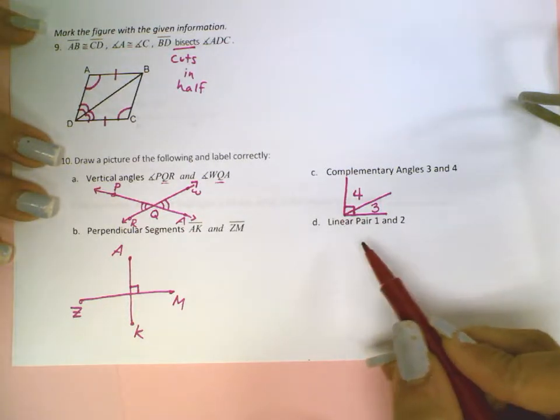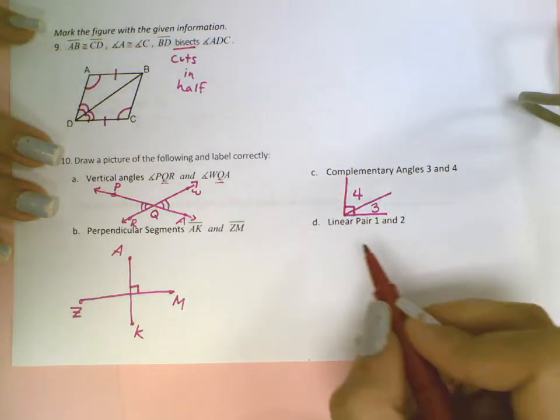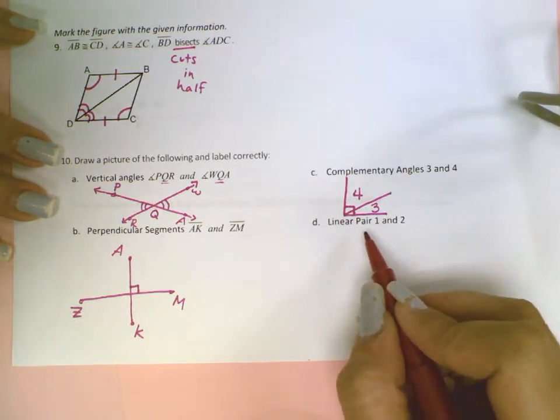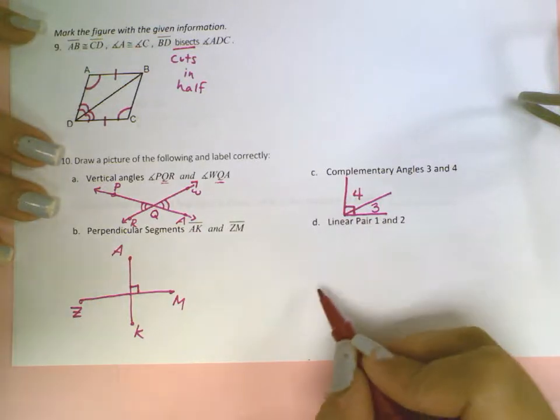Lastly, a linear pair. Linear meaning a line. And a pair of angles that make a line. So I'm going to have a line.